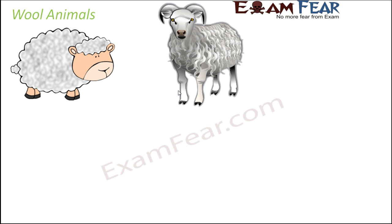Let us talk about some of the popular wool animals. The most common wool animal is the sheep. Sheep can produce many different types of wool: fine wool which can be used for clothing, medium to coarse wool which can be used for making wool yarns, and spun thread which can be used for knitting, weaving, sewing, etc. So sheep can actually produce a lot of varieties of wool used for many different purposes.